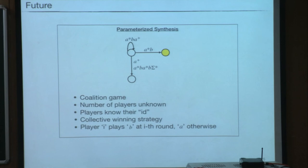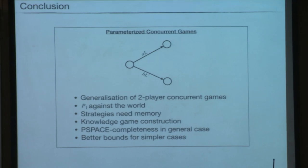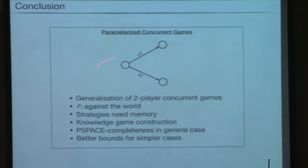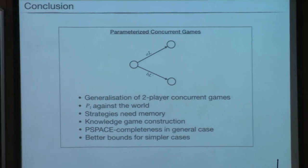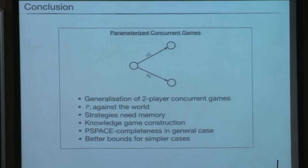To conclude: we generalized two-player concurrent games to the parameterized setting of player 1 versus everyone else. We saw that memoryless strategies are not enough. We proved decidability via the knowledge game construction, which is finite, and established PSPACE-completeness for the general case with better bounds for simpler sub-cases. Thank you.